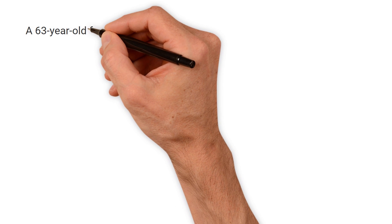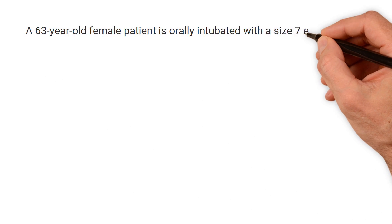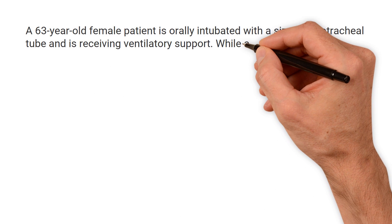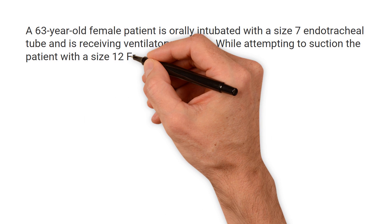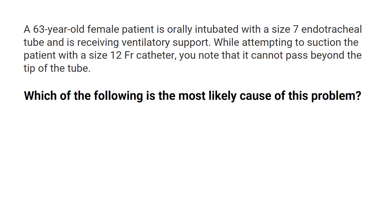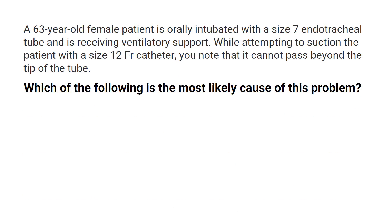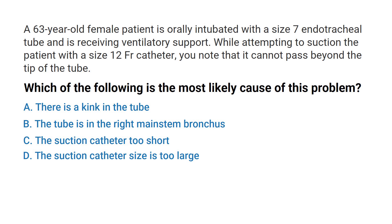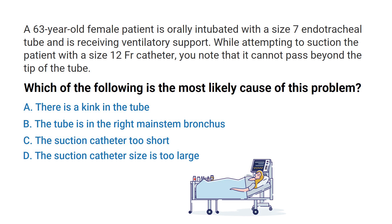A 63-year-old female patient is orally intubated with a size 7 endotracheal tube and is receiving ventilatory support. While attempting to suction the patient with a size 12 catheter, you note that it cannot pass beyond the tip of the tube. Which of the following is the most likely cause? A) There is a kink in the tube, B) the tube is in the right main stem bronchus, C) the suction catheter is too short, or D) the suction catheter size is too large.